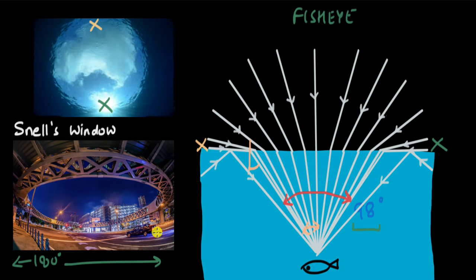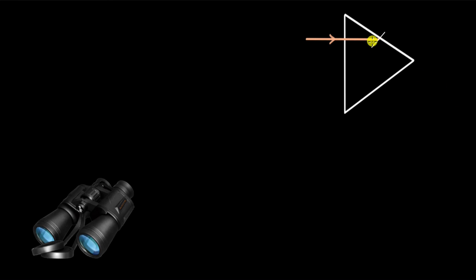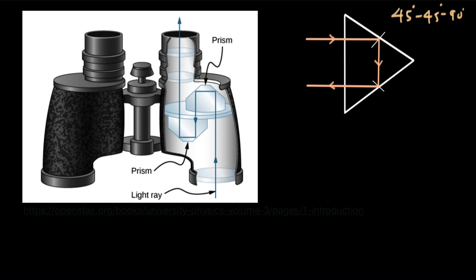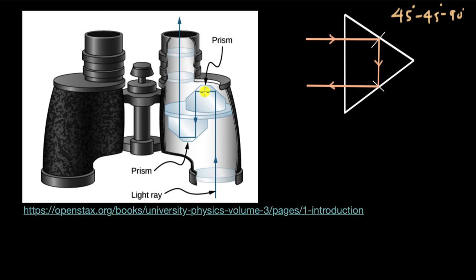Now let's move on to the last application: binoculars. Binoculars use prisms, and light can undergo total internal reflection for a prism with two angles at 45° and one angle at 90°. If a light ray is incident on one face at an angle greater than the critical angle, it undergoes total internal reflection, and again undergoes total internal reflection to exit the prism from the other side. The binocular uses two such prisms so the light reaches the lens closer to the eye.